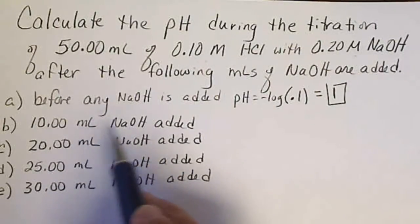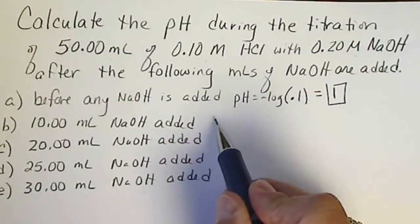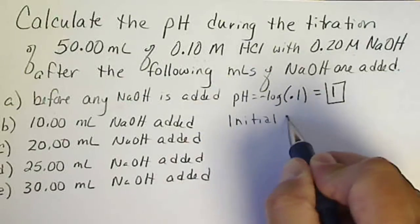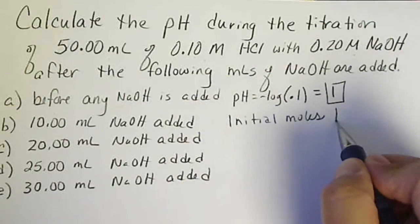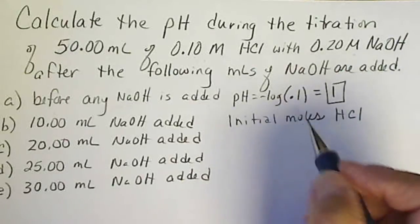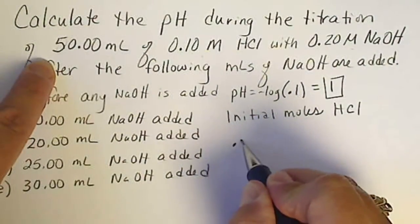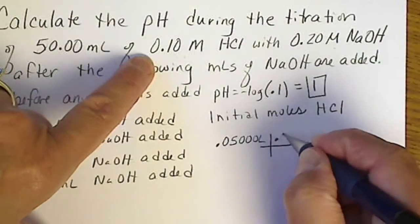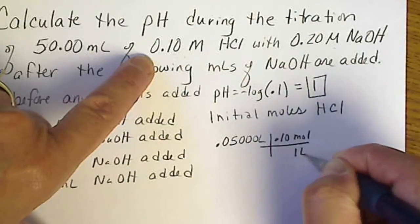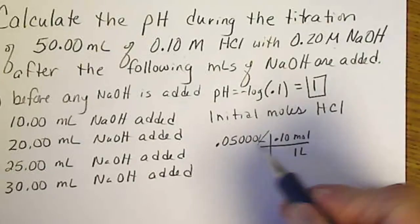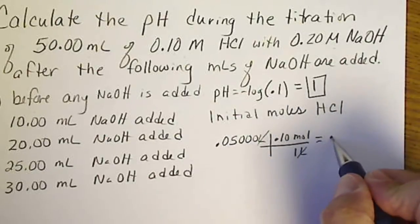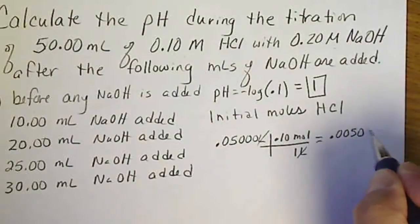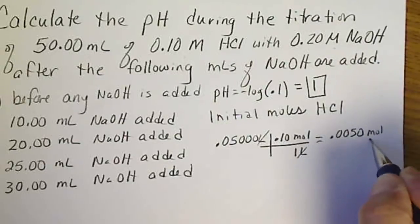Now after we've added 10 milliliters of sodium hydroxide, we need to calculate our initial moles of acid — we'll keep coming back to this number. Our volume of acid in liters is 0.0500 liters, times our concentration 0.10 moles per liter, so we end up with 0.0050 moles of acid.